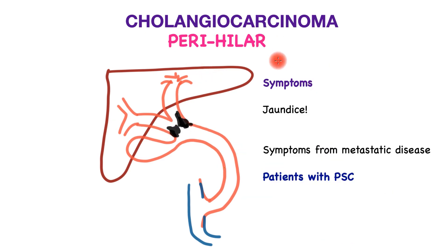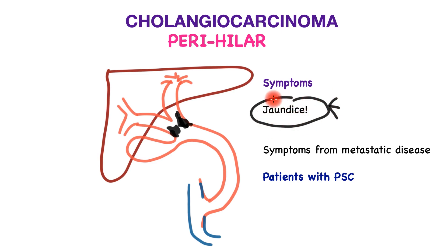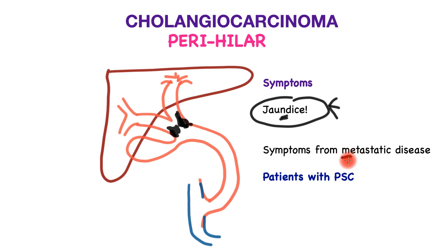The commonest symptom of perihilar cholangiocarcinoma is jaundice — yellow skin, yellowness of the sclera of the eyes, pale stool, metallic taste in the mouth, weakness, loss of appetite, and sometimes reversal of the sleep-wake cycle. This jaundice is typically painless, with some discomfort in the right upper quadrant. Later in the disease course, patients may develop symptoms from metastatic disease such as loss of appetite and weight loss.